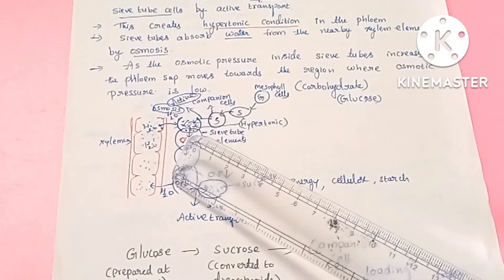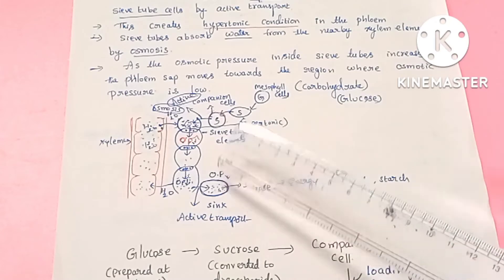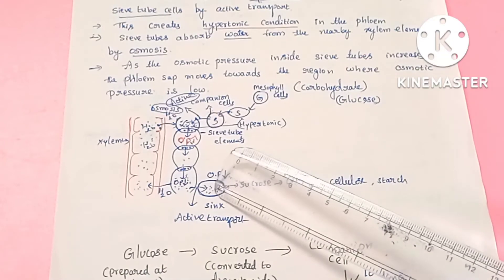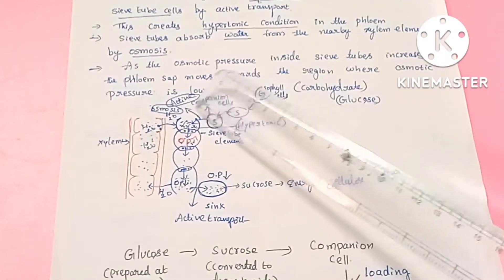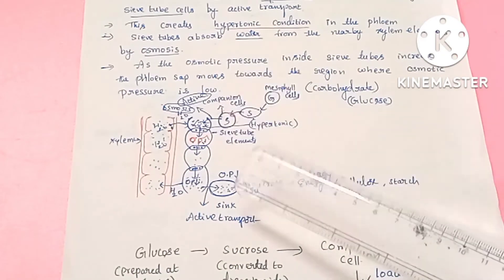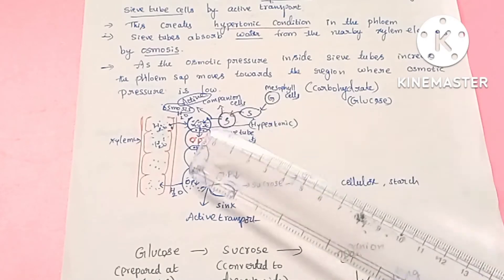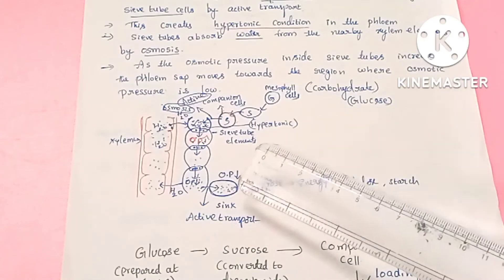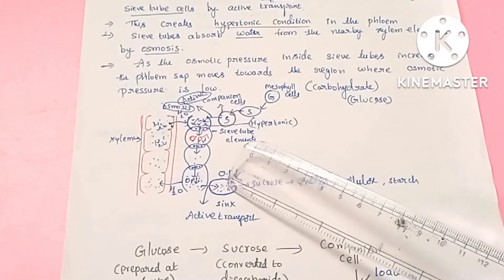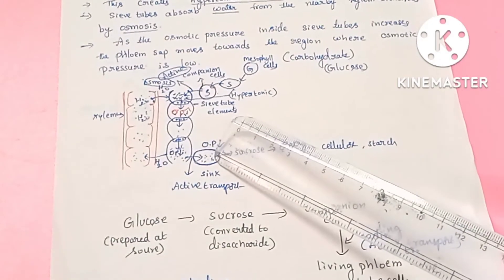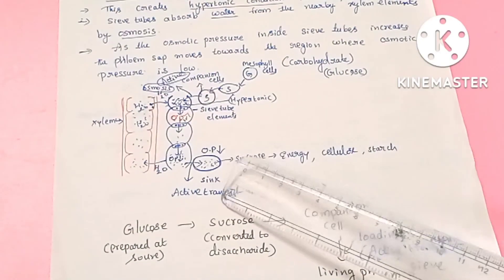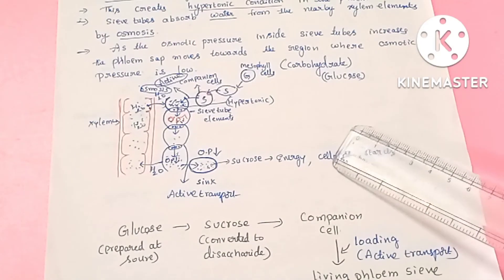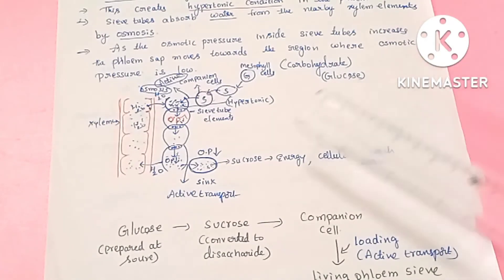The flow moves toward wherever the sink is. At the sink, the sucrose will be unloaded. The unloading process, like the loading process, is an active transport process. At the sink, the sucrose is used by the cells and converted into starch form stored in cell walls.